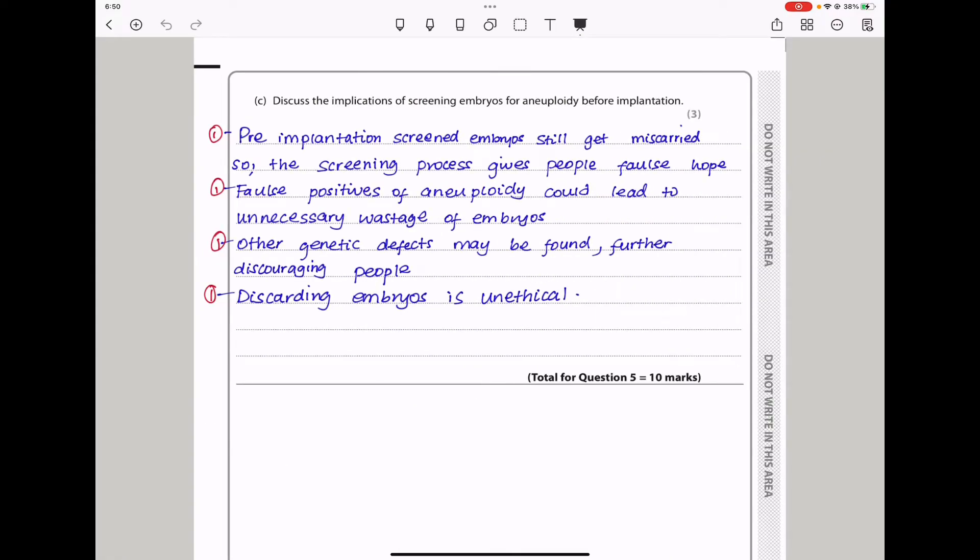Here they say discuss the implications of screening embryos for aneuploidy before implantation. Pre-implantation screened embryos still get miscarried, so the screening process gives people false hope. People will pay for the screening of the embryos and once they're implanted, they end up miscarrying as well. False positives of aneuploidy could lead to unnecessary wastage of embryos. Other genetic defects may be found further discouraging the people. And to some people, discarding embryos is unethical. So this brings us to the end of question 5.